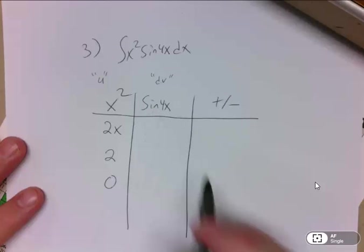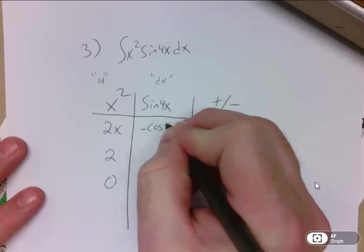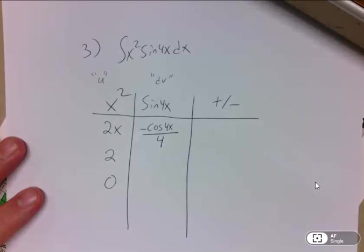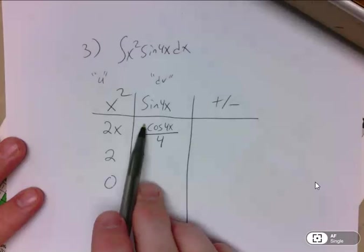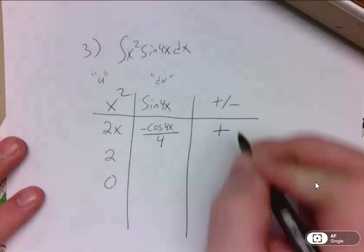So antiderivative of sine, of course, is negative cosine, but there's a thing here. It's 4x. So it's negative cosine of 4x, reverse chain rule kicker, divided by 4. If you want to write it as negative 1 fourth cosine 4x, it's the same thing, obviously. And we always start with plus.